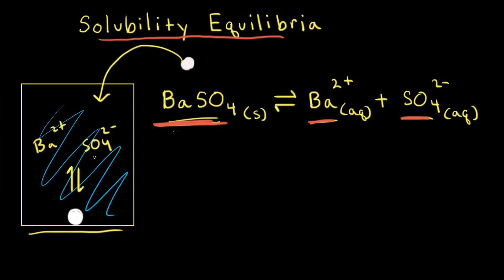When the system is at equilibrium, the concentrations of barium 2+ ion and sulfate anion in solution are constant. The amount of solid is constant too, and this forms a saturated solution.